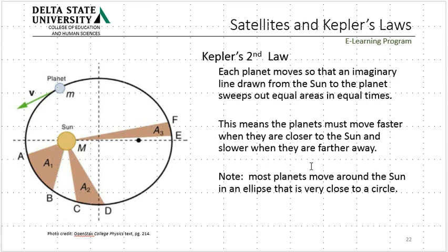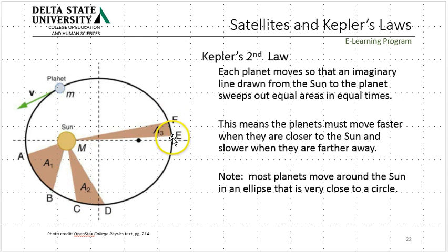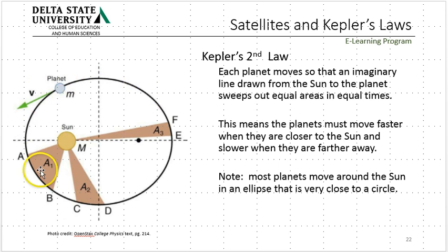Kepler's second law: if you draw a line from the planet to the sun, as the planets go around they sweep out equal areas over a given time. So if over a month you go from here to there on one side, then over a month on the other side you go from there to there, because the two areas are the same. When you're farther away on the far side of the ellipse, you are moving slower. And when you're close in, you're moving faster. The planets don't go at constant speed as they go around the sun because they're going in an ellipse, not a circle.